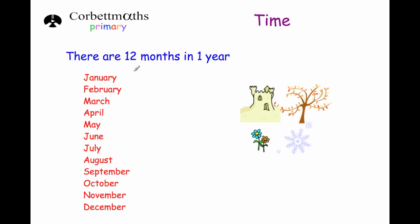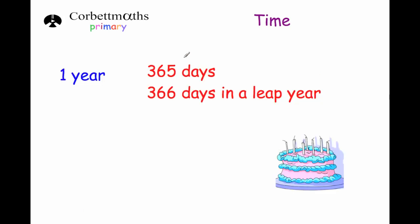The number of days in each month are: 31, and in February it's 28, but in a leap year there's 29, then 31, 30, 31, 30, 31, 30, 31, 30, and 31. In a year there are 365 days, but there's a leap year usually every four years, and that means in a leap year there are 366 days.